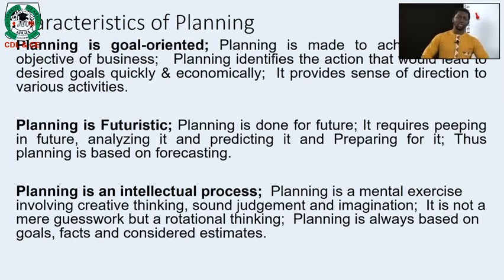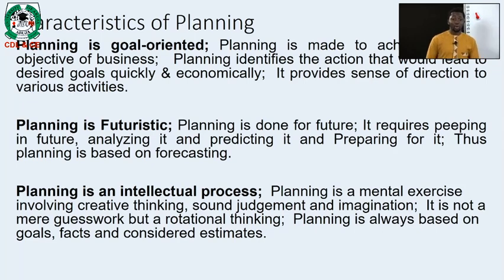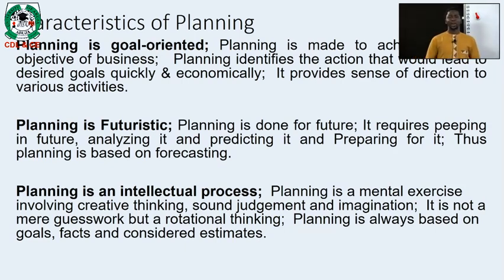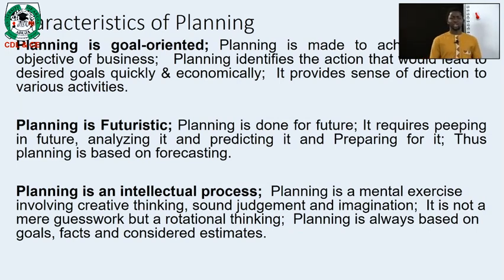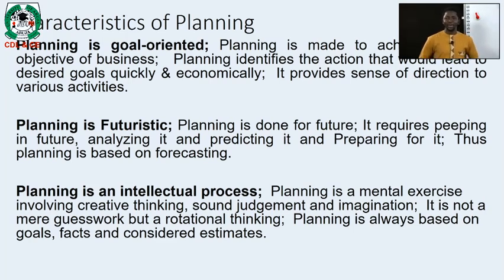What are the various characteristics of planning? Number one: planning is goal-oriented. Planning is made to achieve the desired objectives of a business — we identify which actions will lead to which goals, and which alternatives will help us achieve our goals most efficiently and effectively. It gives a sense of direction to activity. Number two: planning is futuristic — it is preparing for the future, looking into the future, deciding in advance the course of action, what we want to do, who will do it, when and how.